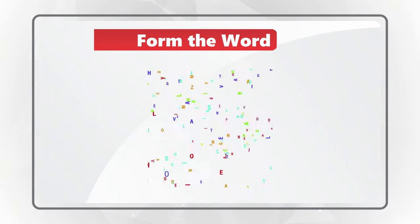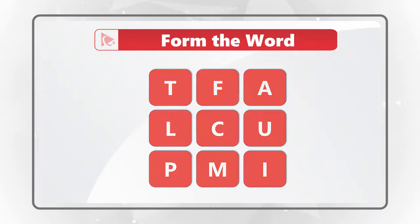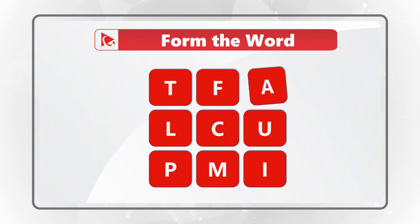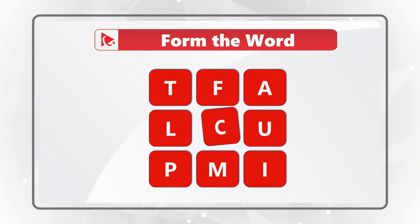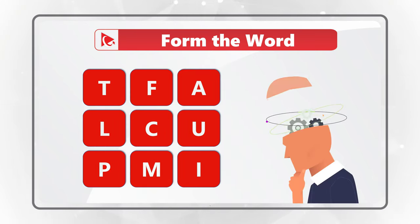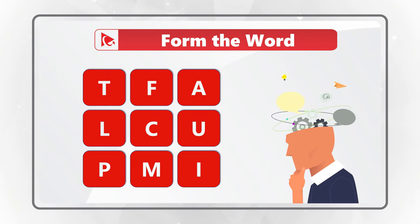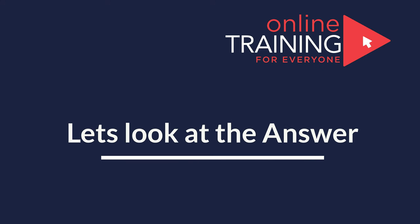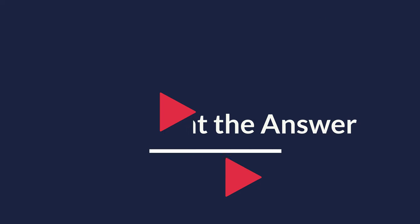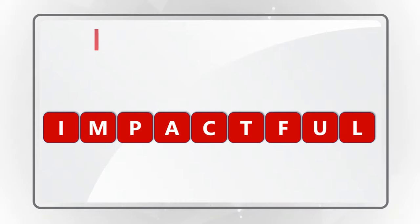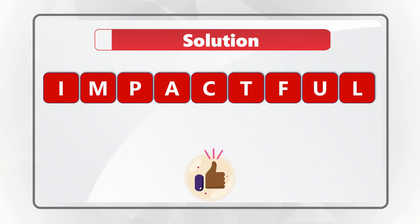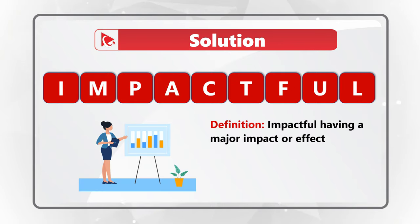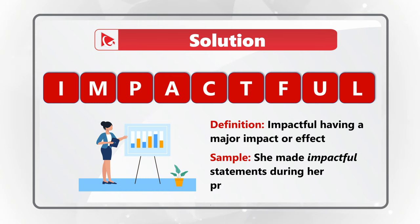This question tests your knowledge of the English dictionary. You need to form a word using all nine letters only once — the letters are T, F, A, L, C, U, P, M, I. Give yourself a little time; it's a very complex nine-letter word. The correct word is 'impactful,' meaning having a major impact or effect. Example usage: 'During her presentation she made impactful statements.'